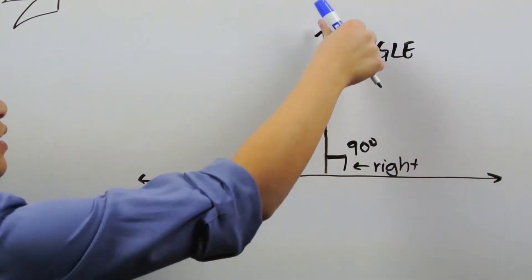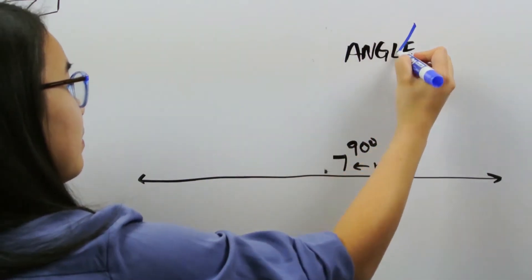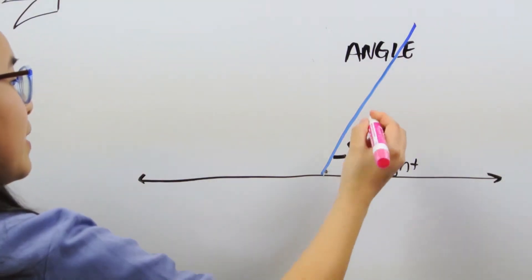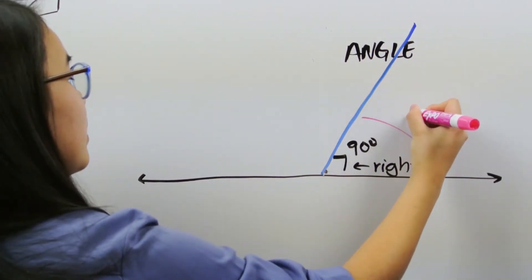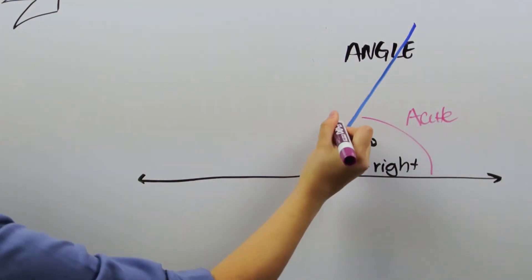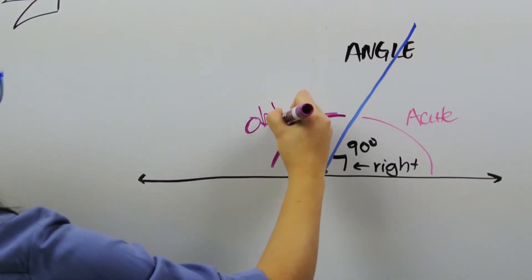But suppose we tilted one of these lines just a little bit so that it wasn't 90 degrees anymore. Well, this angle would now be less than 90 degrees, which we would call an acute angle. And this angle over here would be more than 90 degrees and we would call it an obtuse angle.